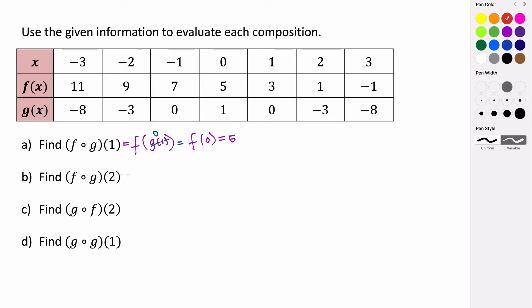Now let's find f of g of 2. We evaluate f at g of 2, so we go first to g and figure out its output when the input is 2. Going to an input of 2 and down to function g, the output of g when our input is 2 is negative 3.